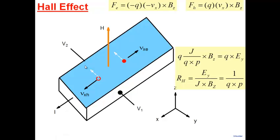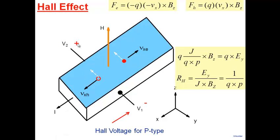This voltage is called the Hall voltage, named after the person who first performed this experiment. We can measure this voltage between V2 and V1. The direction of E_y: the Lorentz force pushes holes in one direction, so the electric field forces holes in the opposite direction — making one side positive and the other side negative.